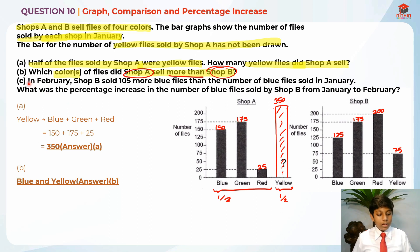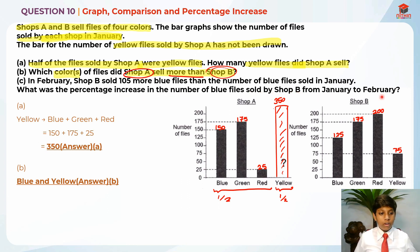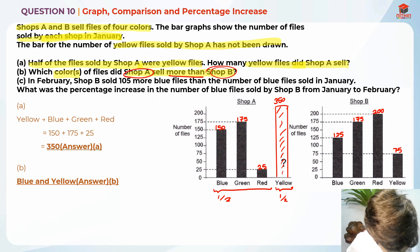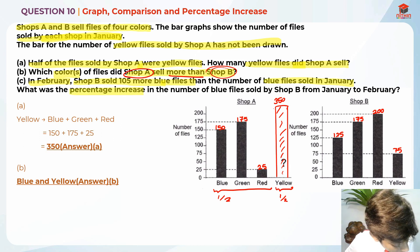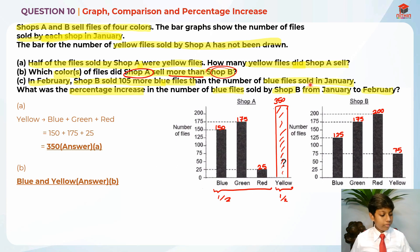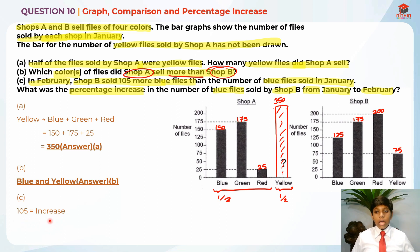Now moving on to part C. In February, shop B sold 105 more blue files than the number of blue files sold in January — so not January anymore, February. In January they sold 125 blue files, but in February shop B sold 105 more. What was the percentage increase in the number of blue files sold by shop B from January to February? The base should be January because of the word 'from', so January is 125, and 105 is the increase.